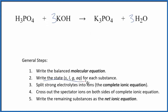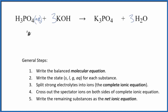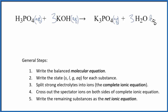Next, I write the state for each substance. Phosphoric acid — this is an interesting one and one you should memorize. This is a weak acid, which means it's a weak electrolyte. It will dissolve, so it's going to be aqueous, but when it dissolves, not much of it is going to dissociate into ions. Potassium hydroxide is a strong base, so it will dissolve, dissociate into its ions, and be aqueous. Potassium phosphate is going to be soluble, and water is a liquid.